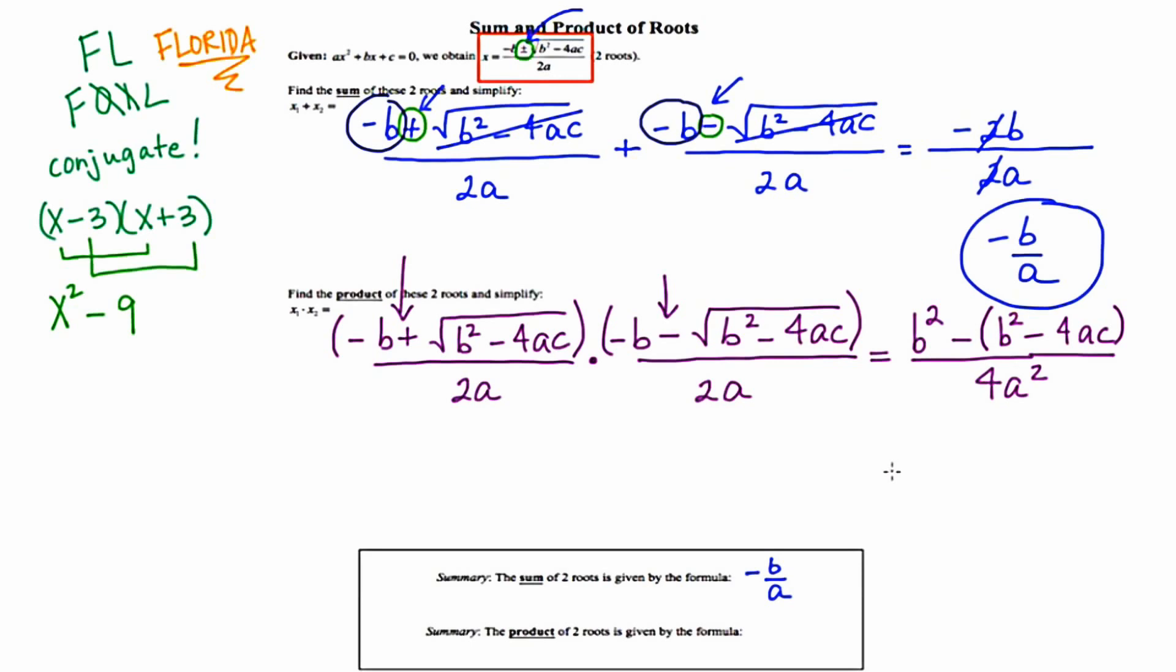I notice on the top that I've got a b squared and a minus b squared, so they're going to cancel out. And what I'm left with is 4ac over 4a squared. And the 4s cancel out.